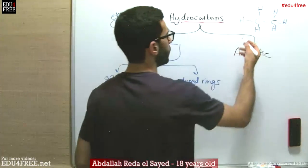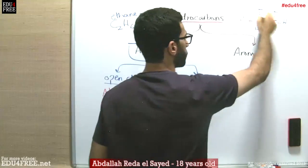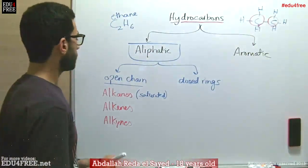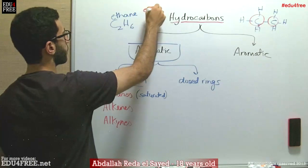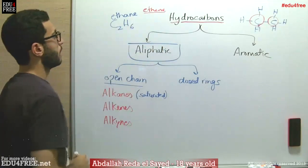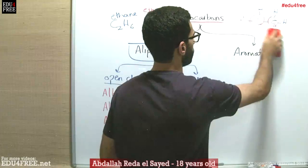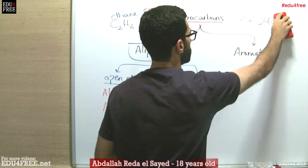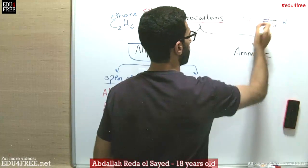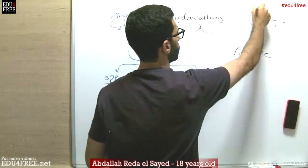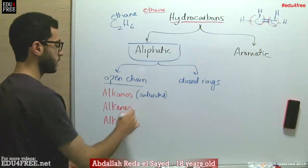Each carbon here forms four bonds, and the other carbon also forms four bonds. But if we consider C2H4, the molecular structure will be different — there is a double bond between the two carbons. So in this case, it is unsaturated.